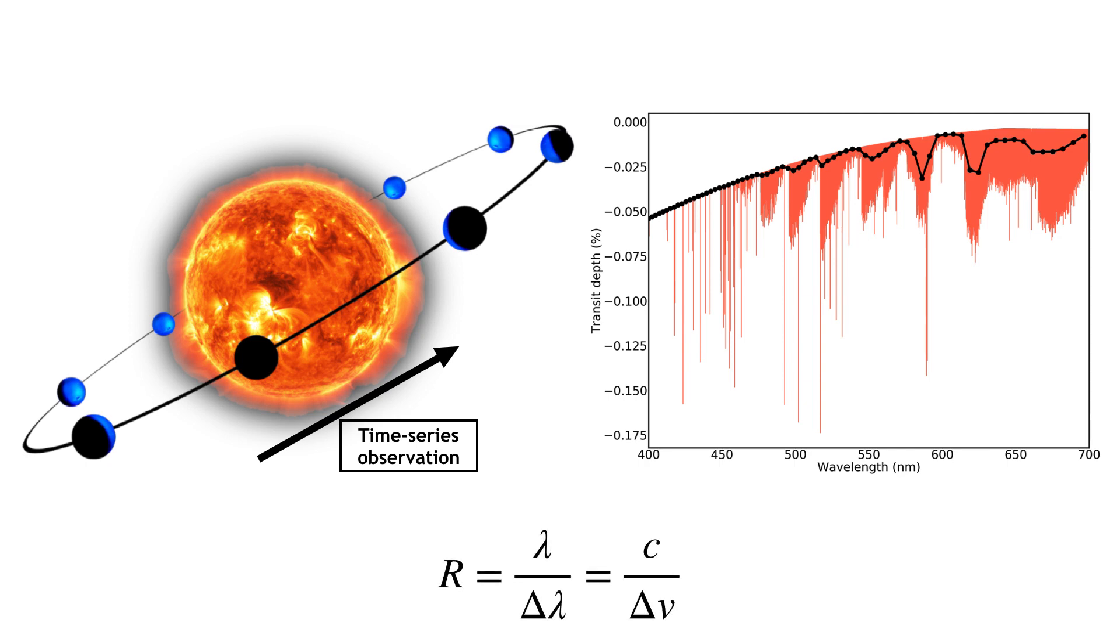We define the spectral resolution R of the spectrum as the wavelength over the minimum wavelength difference that can be resolved at that wavelength. This can be expressed in terms of the Doppler effect as the speed of light over the smallest Doppler velocity that can be resolved. Typical high-resolution spectrographs have resolutions of around 100,000, which means that they can resolve motions on the order of a few kilometers per second, much smaller than the typical orbital velocity of a close-in planet.